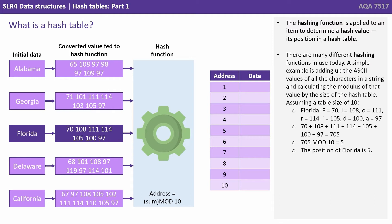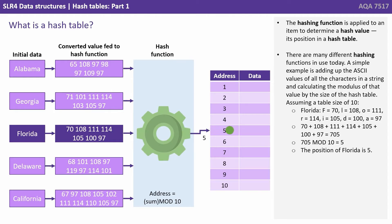So assuming a table size of 10, we could take 'Florida' as an example. F equals 70 — this is the denary value of capital F — then L equals 108, O equals 111. We carry on and end up with a total of 705. We then do 705 modulus 10, because that's the size of the final table, and it gives us 5. We've now calculated, using our very simple hashing function, the position in the final table to store the text value 'Florida'.